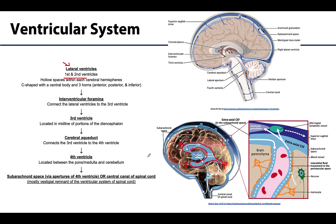Both lateral ventricles drain CSF via the interventricular foramina — one for each lateral ventricle — which is the connection between the lateral ventricle and the third ventricle. The third ventricle is located in the midline of the diencephalon, as a space in portions of the thalamus and hypothalamus. The third ventricle is connected to the fourth ventricle by the cerebral aqueduct, which is generally longer than the interventricular foramina and runs through the midbrain region.